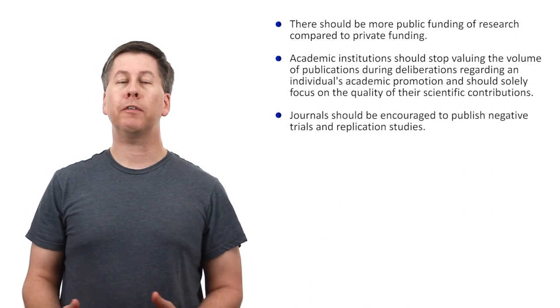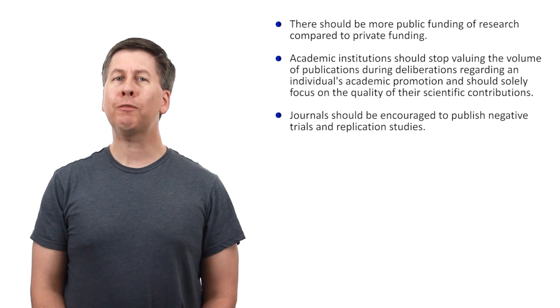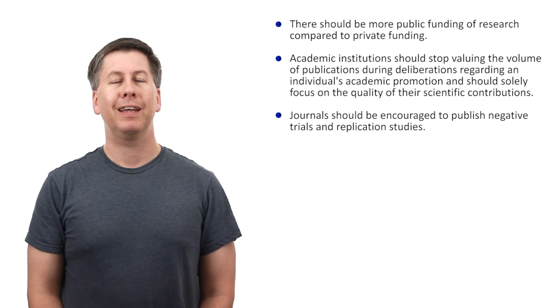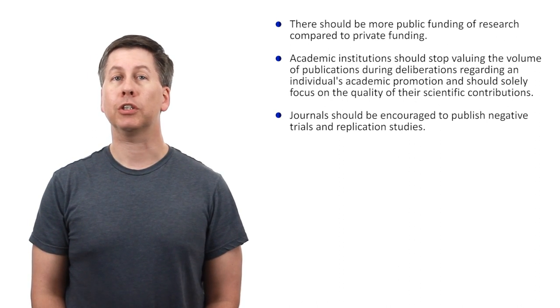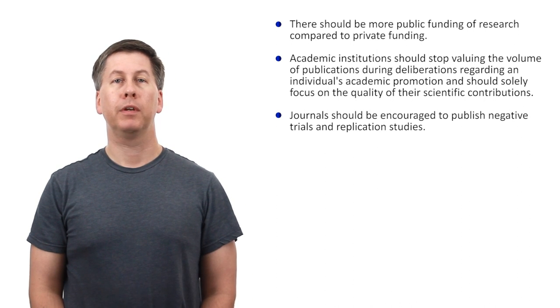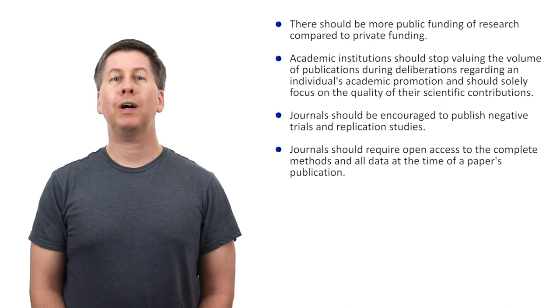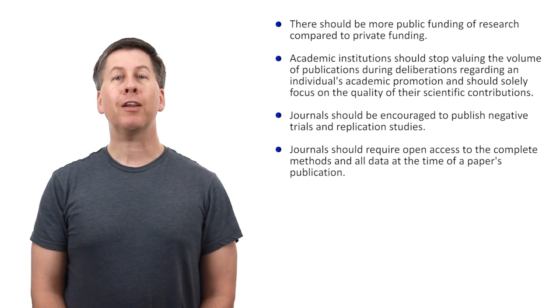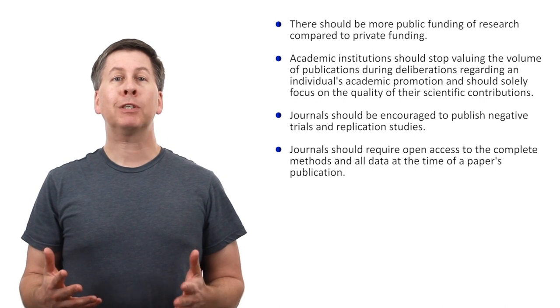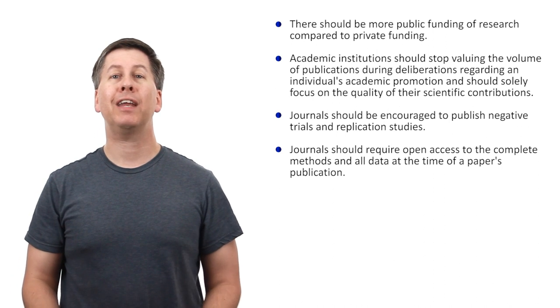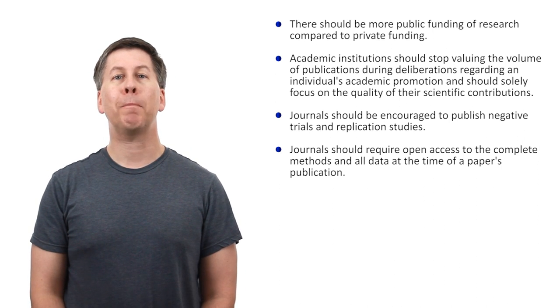Journals should be further encouraged to publish negative trials and replication studies. In fact, there exists a journal dedicated to the publication of negative results, descriptively called the Journal of negative results in biomedicine. Its goal is providing scientists and physicians with responsible and balanced information to support informed experimental and clinical decisions. We need more of that mentality. Journals should require open access to the complete methods and all data at the time of a paper's publication. This will allow the public to double check the work of the authors, to monitor for data dredging, and to make it easier for other researchers to attempt replication studies. I didn't even discuss in this video the observation that a surprisingly high number of published papers contain simple math errors missed by our poor peer review process. These are hard to catch if the full data is not made available to the public.